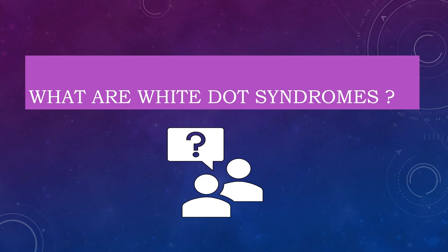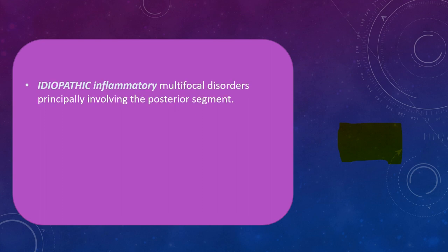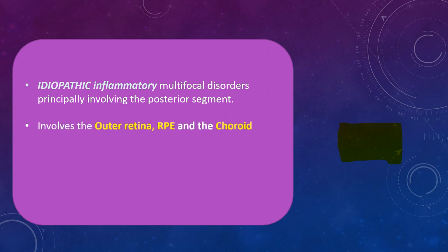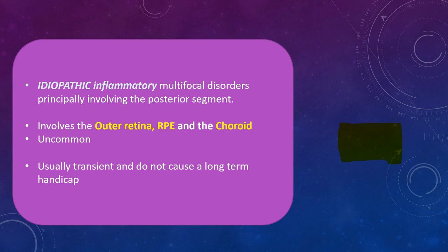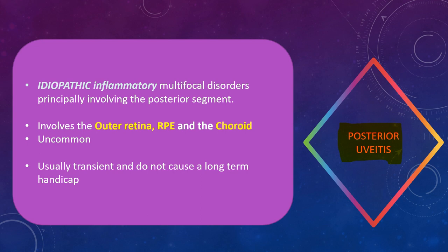White dot syndromes are a group of idiopathic, inflammatory, multifocal disorders which involve the posterior segment. Idiopathic means we still do not understand these white dot syndromes completely. By posterior segment I mean that they involve the outer retina, the retinal pigment epithelium, and the choroid. These disorders are quite rare, usually of transient nature, and they do not cause long-term visual handicap. Since they involve the posterior segment, they form an important chunk of posterior uveitis.